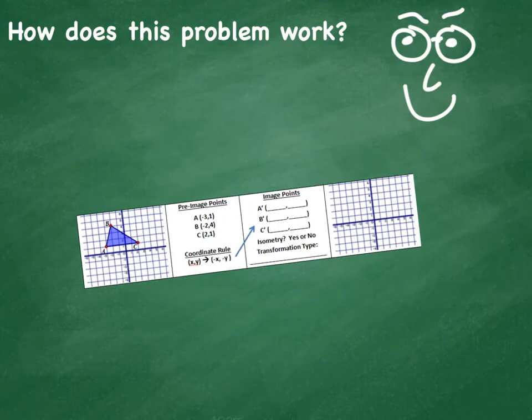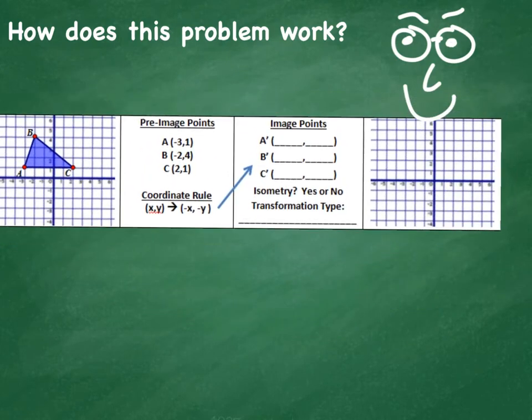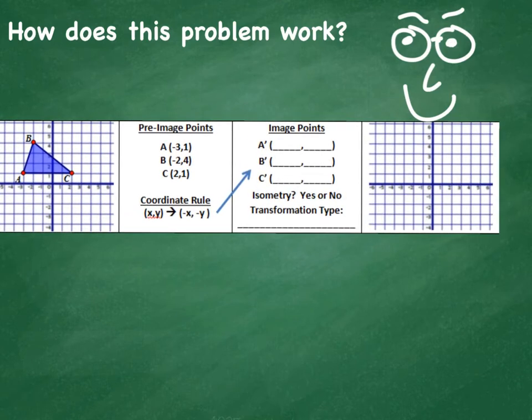Let's take a look at this problem. The way this problem works is we give you an initial triangle and list the points, the coordinates of those vertices.